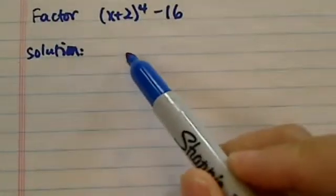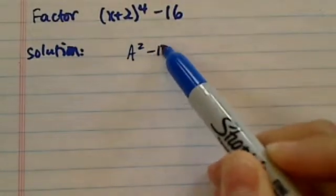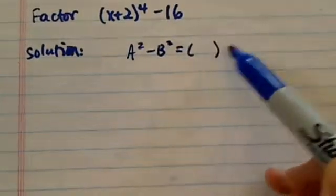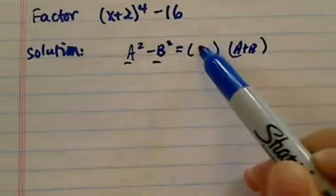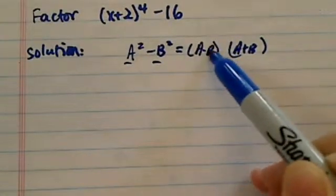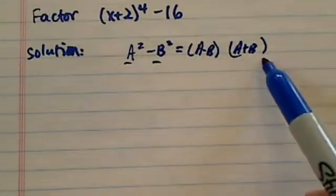To factor those, what you need to recognize is that a squared minus b squared is equal to a difference of squares. What they call it is a difference of squares because this is squared and it's different: a minus b times a plus b.